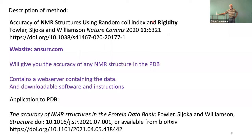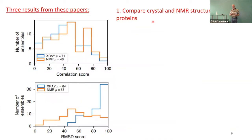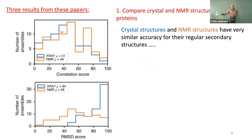I want to show you three results from those published papers. The first thing we did was compare, where they exist, NMR structures to crystal structures of the same protein, asking how NMR structures compare to crystal structures. The top panel shows the correlation score — are the peaks and troughs in the same place, i.e., is the secondary structure correct? And they are very similar. So NMR and crystal structures are very similar in terms of how well they capture the overall structure of the protein.